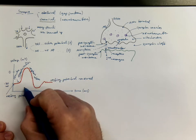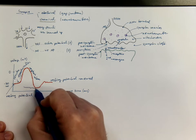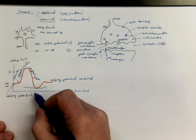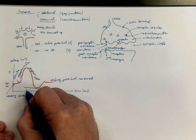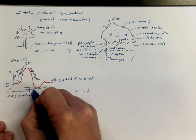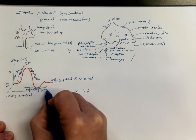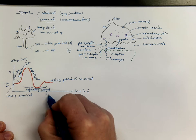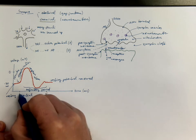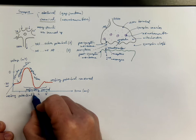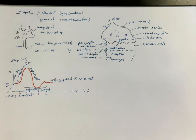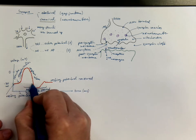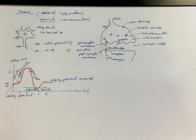During this time, the neuron cannot react to other impulses no matter how strong they are — this is called the refractory period. The renewal of the resting potential may take approximately 5 milliseconds. This is a very simplified idea and more details will be discussed in physiology classes.